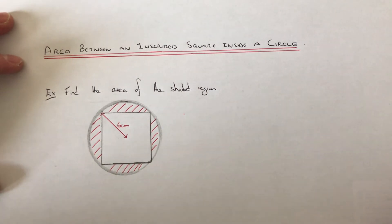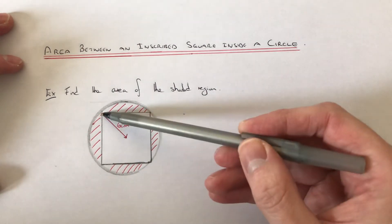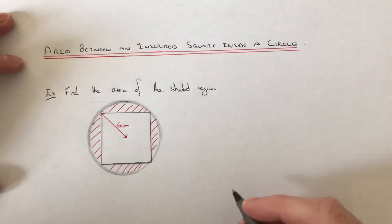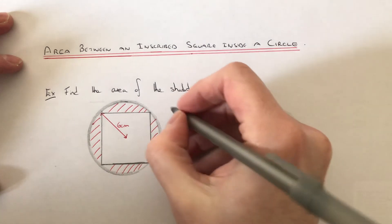The tricky bit will be working out the area of the square because we don't have the side lengths of the square. We're given the radius to start off with.